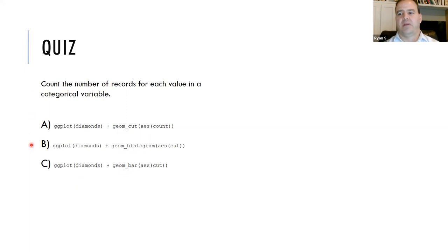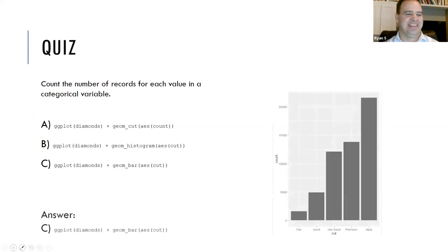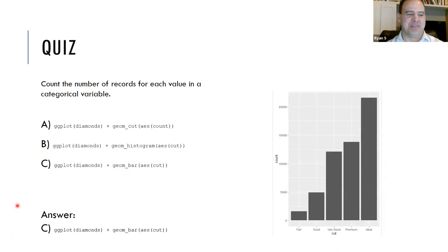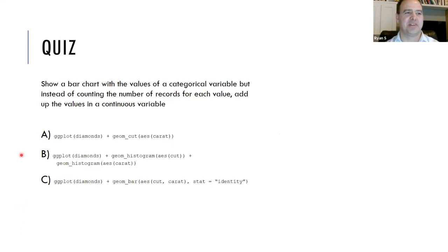Anybody want to answer — you can unmute or put it in the chat. Bruno says C. Exactly right. So this is the very first one we looked at — a bar chart.